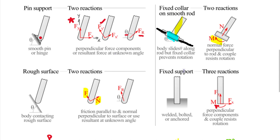These multi-force systems are equivalent supports. A pin is really one single force at an unknown angle, and the fixed support with couples represents complex distributed loads at the material interface. What we represent as clean force components and couples is computationally easier, but the actual interaction between materials involves distributed forces of changing magnitudes. It's good to keep in mind that the simplified support reactions are representations, not the actual physical interaction.